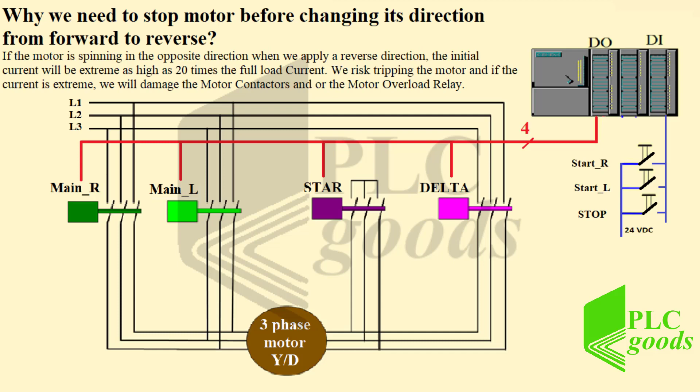While we need to stop the motor before changing its direction from forward to reverse, if the motor is spinning in the opposite direction when we apply a reverse direction, the initial current will be extreme, as high as 20 times the full load current. We risk tripping the motor, and if the current is extreme, we will damage the motor conductors or the motor overload relay.